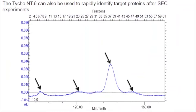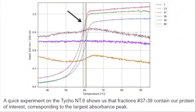The last type of column I'll discuss today is size exclusion chromatography. Using a similar principle, we're identifying areas of absorbance on the chromatogram and rapidly identifying those proteins using the TYCO. We can see that we've got three fractions from the largest absorbance peak which have a nice, well-defined curve on the TYCO with a Ti around 60 degrees. The other fractions at other points of absorbance are flat or exhibit very small transitions — those aren't the proteins we're looking for.